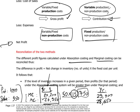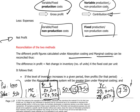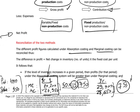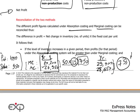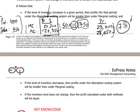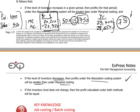In year two, we reduced the inventory back down to zero — the inventory went down by 50 units. Again, we have the same effect: 50 times $15 gives us $750, explaining the difference between the marginal and absorption costing results. Only in this case, the absorption costing profit will be less than the corresponding marginal costing. So if the inventory level decreases, the profits under absorption costing will be smaller than under marginal costing.